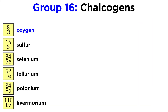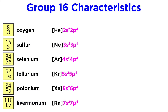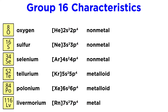In addition to oxygen, this group includes sulfur, selenium, tellurium, polonium, and livermorium. Elements in this group have electron configurations ending in ns2 and p4, and it is here where metals are finally the minority.